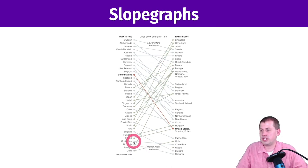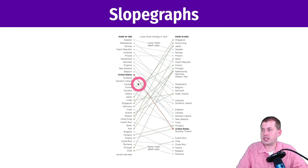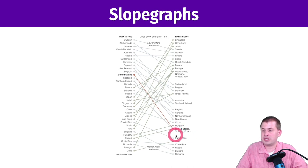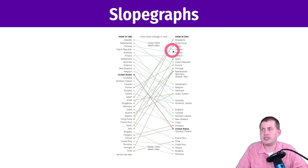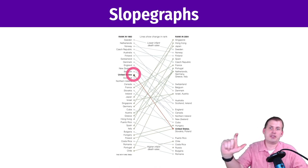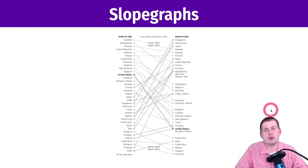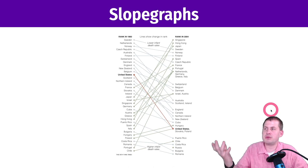The steeper the line in a slope graph, the greater the change. Costa Rica dropped just one spot — a very small slope. The United States dropped dramatically from near the top in 1960 to the level of Slovakia, Poland, and Chile by 2004. Colors encode additional information: gray lines show rates that got worse, green lines show rates that improved, and the United States is highlighted in red as the main point of interest.